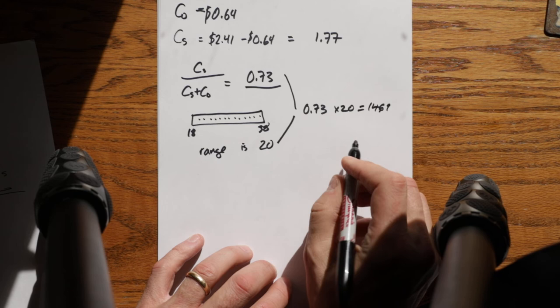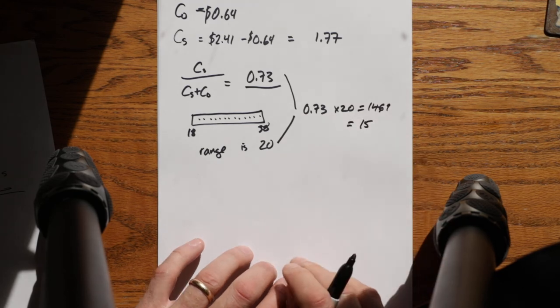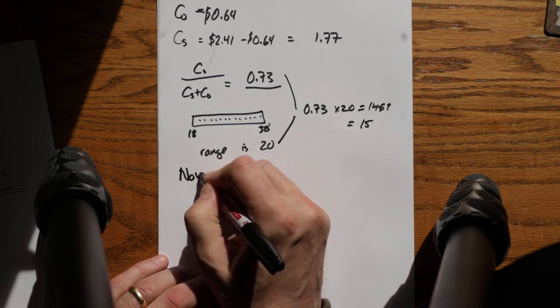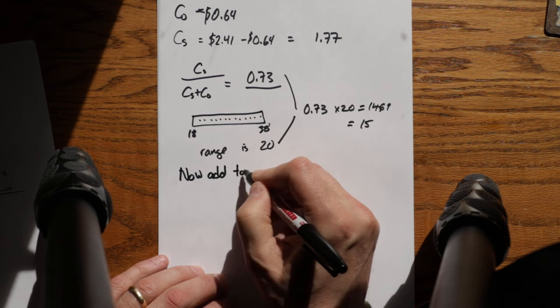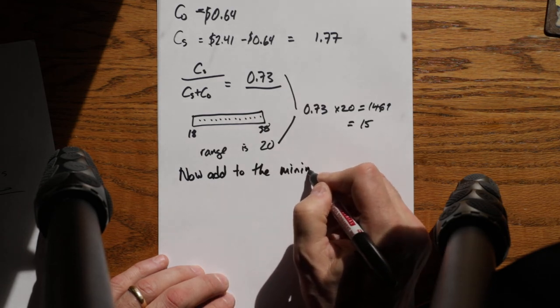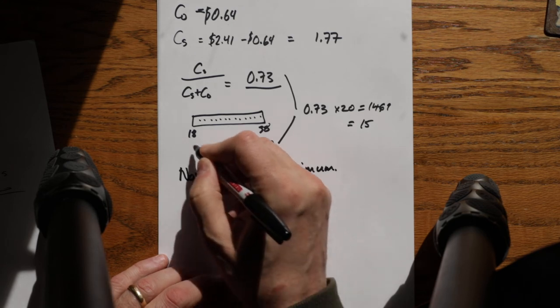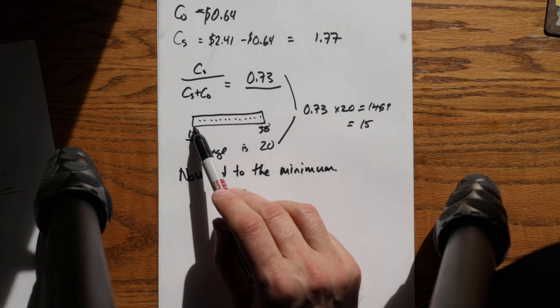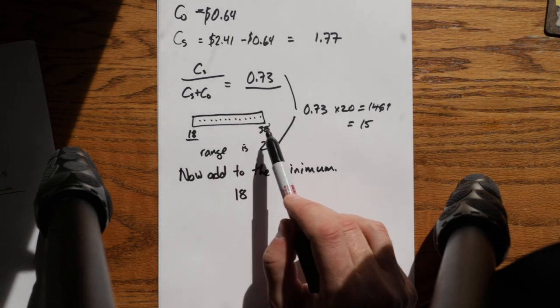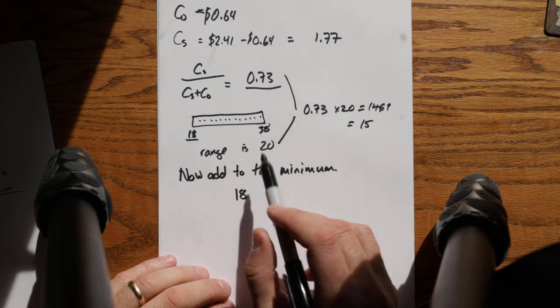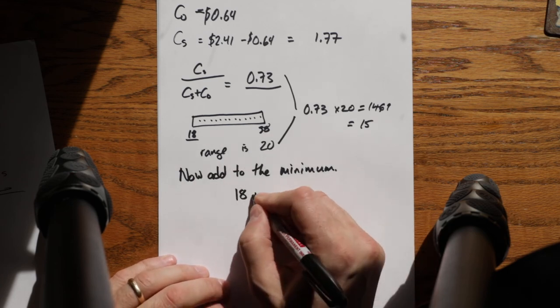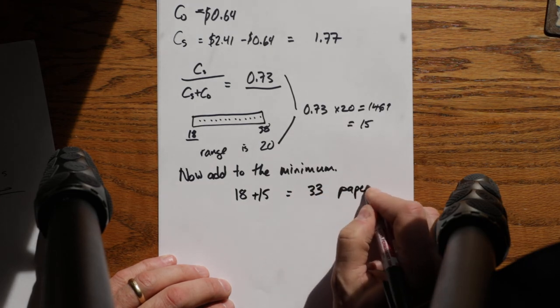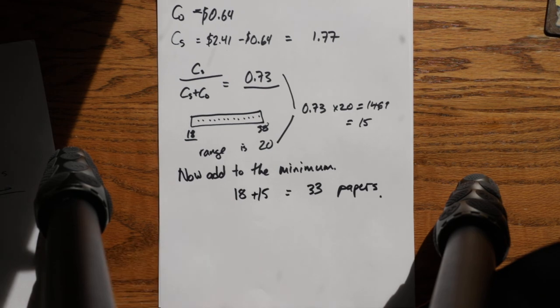We get 14.69, so we then round that up and we get 15. We then add to the minimum, which is 18. You're going to sell at least 18. You're going to sell somewhere between 18 and 38, and the critical fractile you multiply times the range. 18 plus 15 equals 33 papers. Your optimal order quantity in this case is 33 papers. That's how many you want to order to maximize your expected return over time.